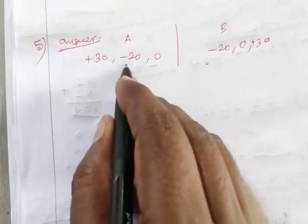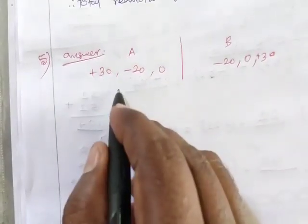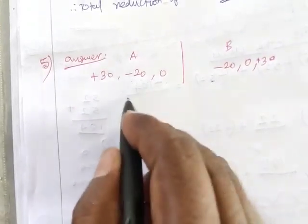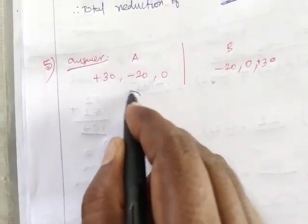Plus 30 minus 20. 30 minus 20 is 10. 10 plus 0 is 10. That's the score is 10.